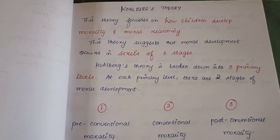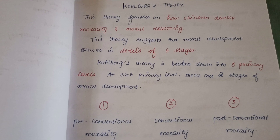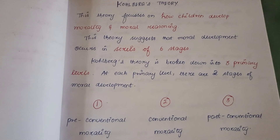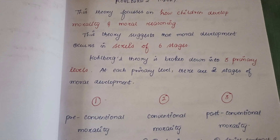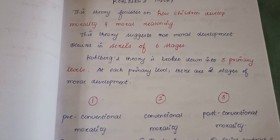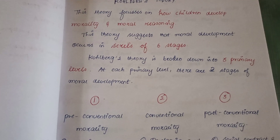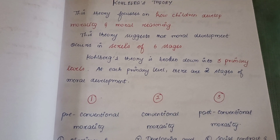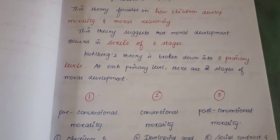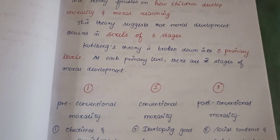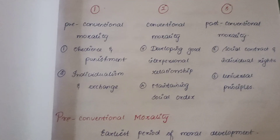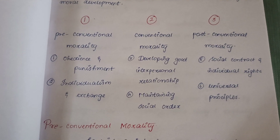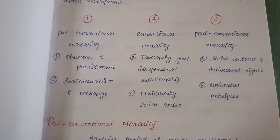The 6 stages are grouped into 3 primary levels, with 2 stages per level — so 3 times 2 gives 6 stages. A child's moral development happens across these stages. The three primary levels are: pre-conventional, conventional, and post-conventional.